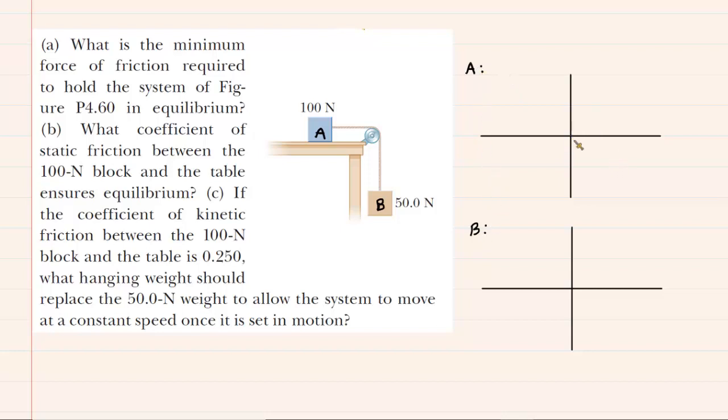We'll do block A first, and we know, of course, that the gravitational force is pulling block A downward. That has a value of 100 newtons, as indicated in the figure.